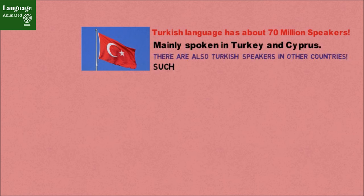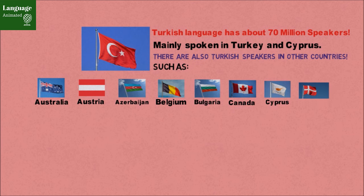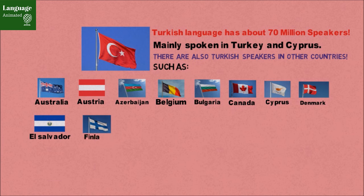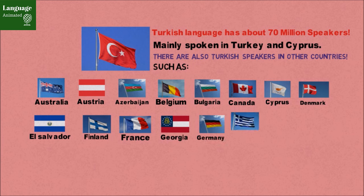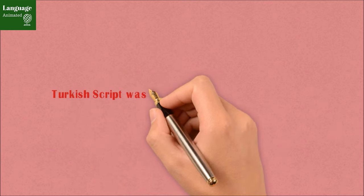Turkish is a Turkic language with about 70 million speakers, mainly in Turkey and Cyprus. There are also Turkish speakers in Australia, Austria, Azerbaijan, Belgium, Bulgaria, Canada, Cyprus, Denmark, El Salvador, Finland, France, Georgia, Germany, Greece, Honduras, Iran, Iraq, and Palestine.